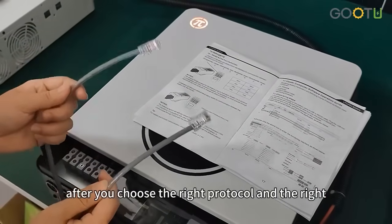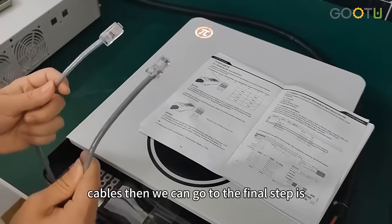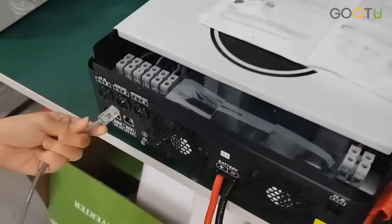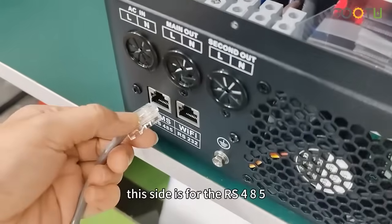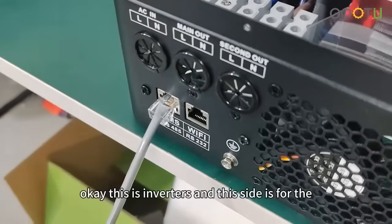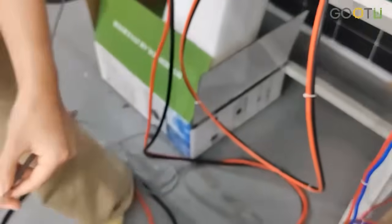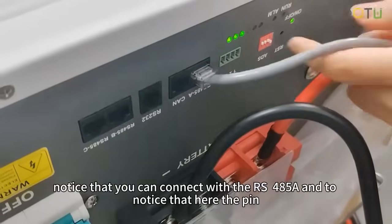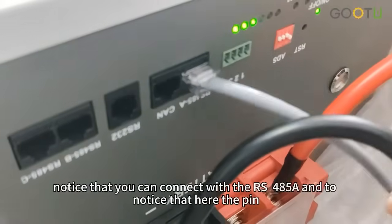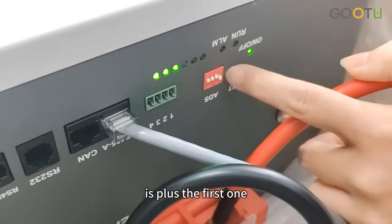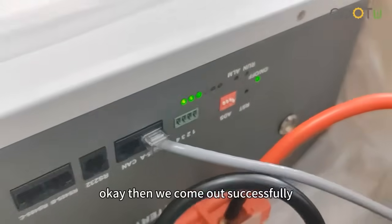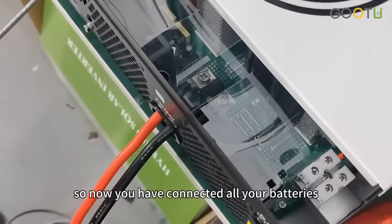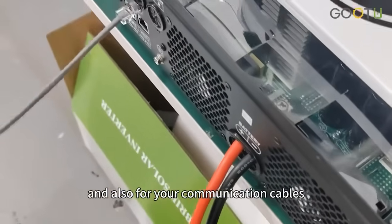After you choose the right protocol and the right cables, then we can go to the final step, which is to connect with our inverters and the battery. This side is for the RS-485. This is the inverter, and this side is for the battery side. You need to notice that you connect with the RS-485A, and notice that here the pin is plus first. Then we connect successfully. So now you have connected all your batteries and also your communication cables.